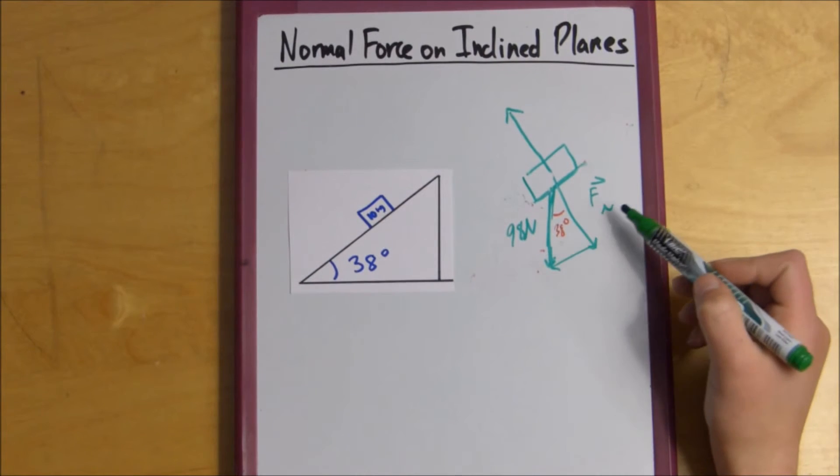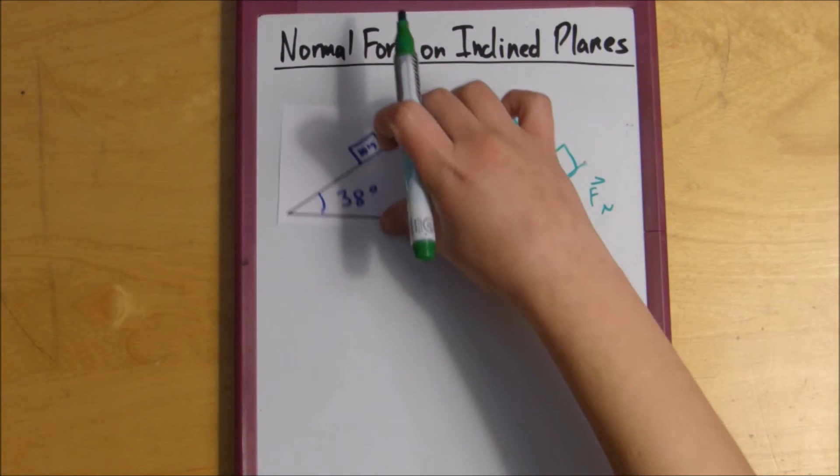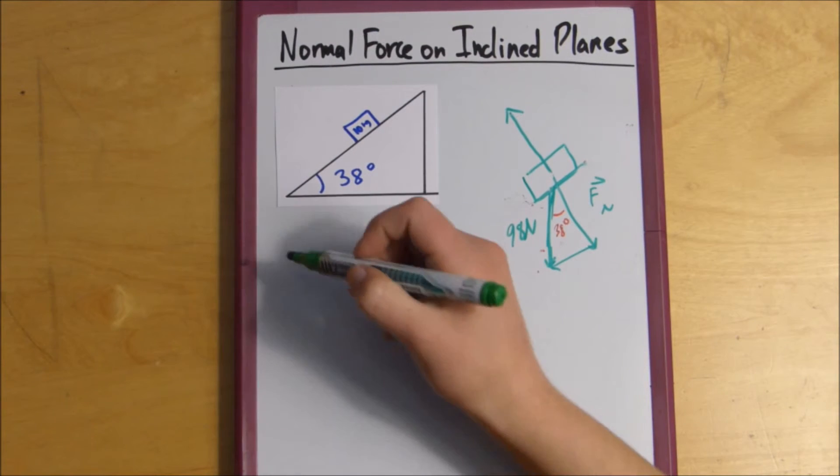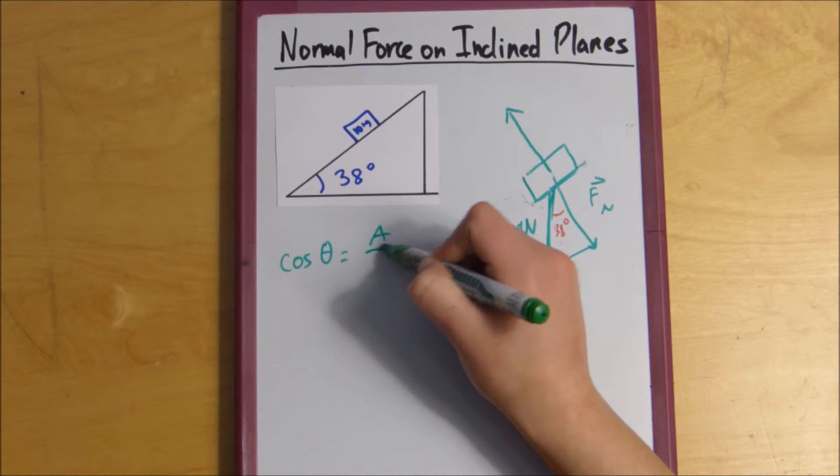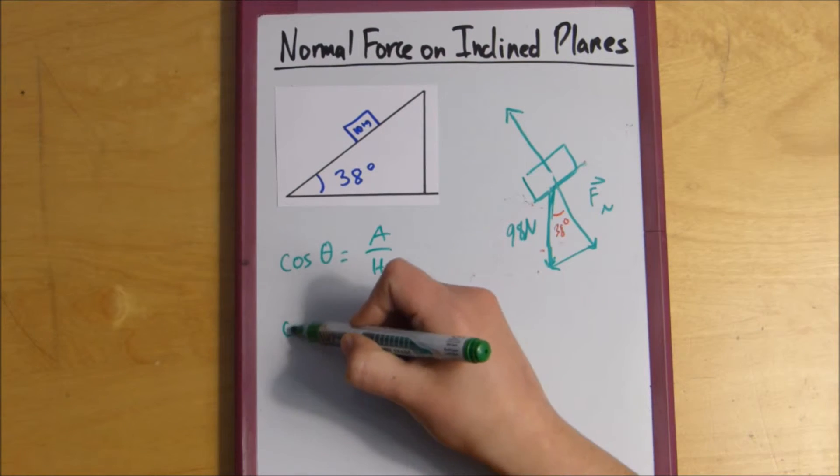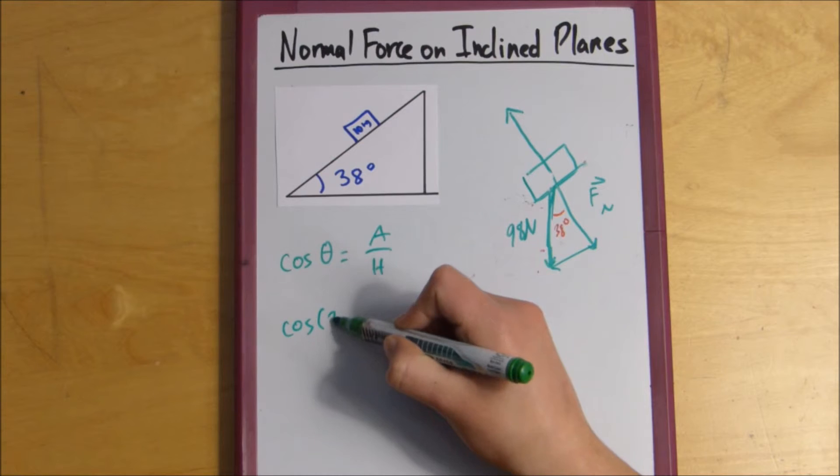So we have adjacent and hypotenuse. And we know that cosine has both of those. Cosine of theta equals adjacent over hypotenuse. So we just fill in the stuff we know. We know the angle, so that's 38 degrees.